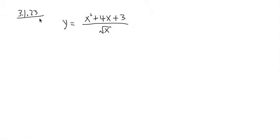Alright, 3.1.23. y equals x squared plus 4x plus 3, all over square root of x. We are going to find the derivative of this function. First of all, do not use the quotient rule. Second of all, you can use the power rule right away. This is how we are going to do it.